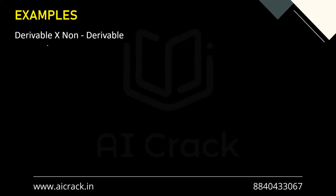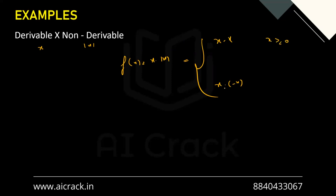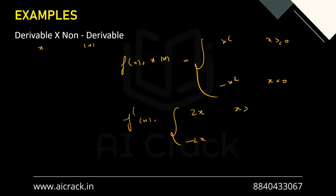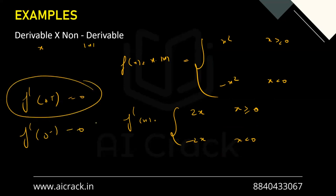For differentiable multiplied by non-differentiable, take F(x) = x and G(x) = |x|. The product is x·|x|, which opens to x² when x > 0 and -x² when x < 0. The derivatives are 2x and -2x respectively. Calculating F'(0⁺) = 0 and F'(0⁻) = 0 — they're equal, so the function is differentiable at 0. This proves differentiable × non-differentiable can be differentiable.